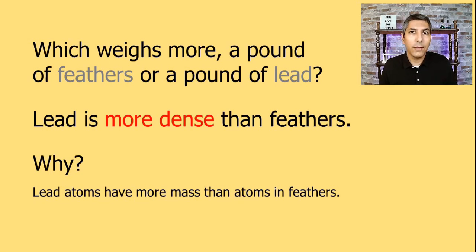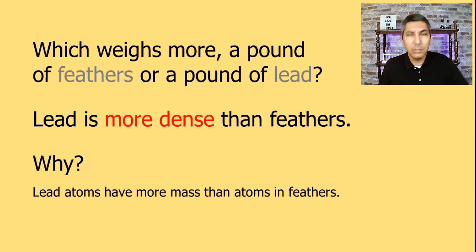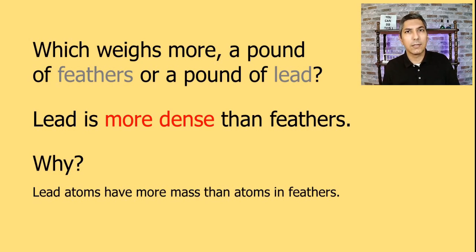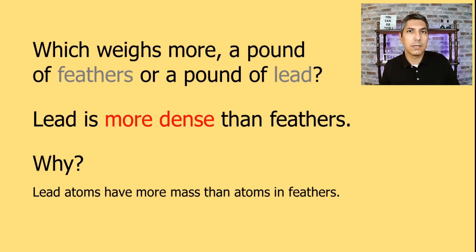If you look at the periodic table, you'll find that lead, which has the symbol Pb, has an atomic mass of well over 200 atomic mass units — about 207.2 in fact. On the other hand, feathers are made primarily of carbon, hydrogen, oxygen, probably some nitrogen, and maybe some other elements as well. If you look at the atomic masses of those elements, you'll find that all of them weigh much less than lead. Hydrogen weighs about 1 atomic mass unit, carbon about 12, and oxygen about 16. These atoms are just a lot less massive than atoms of lead.